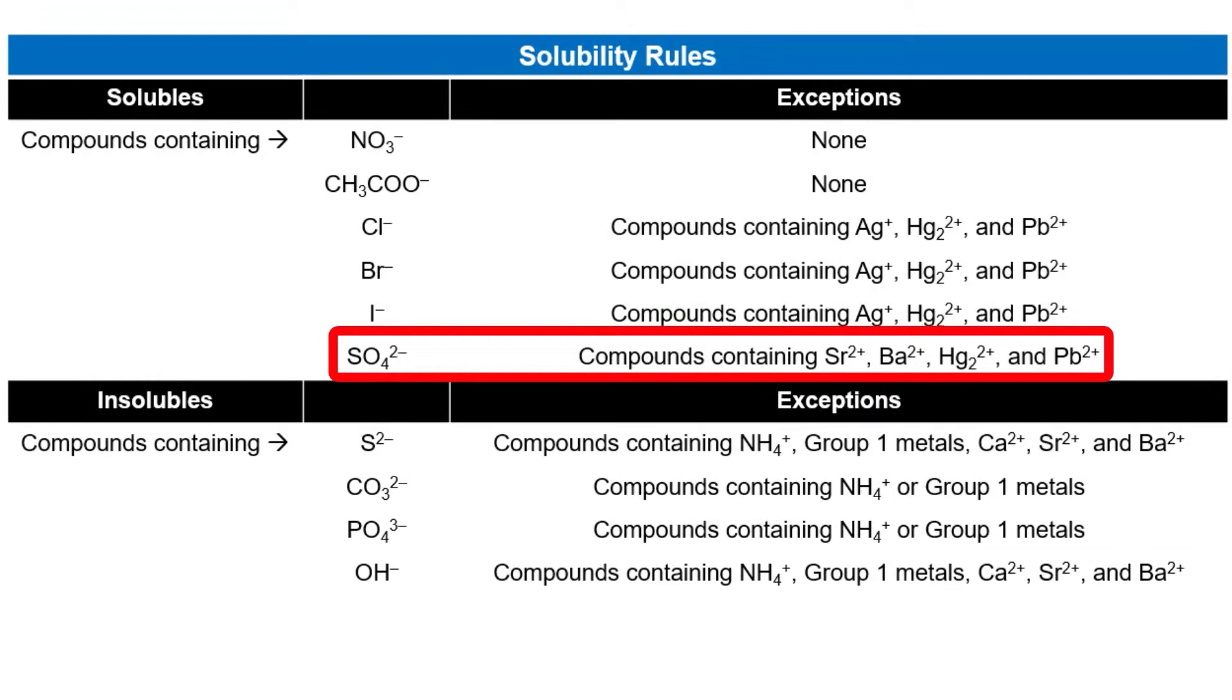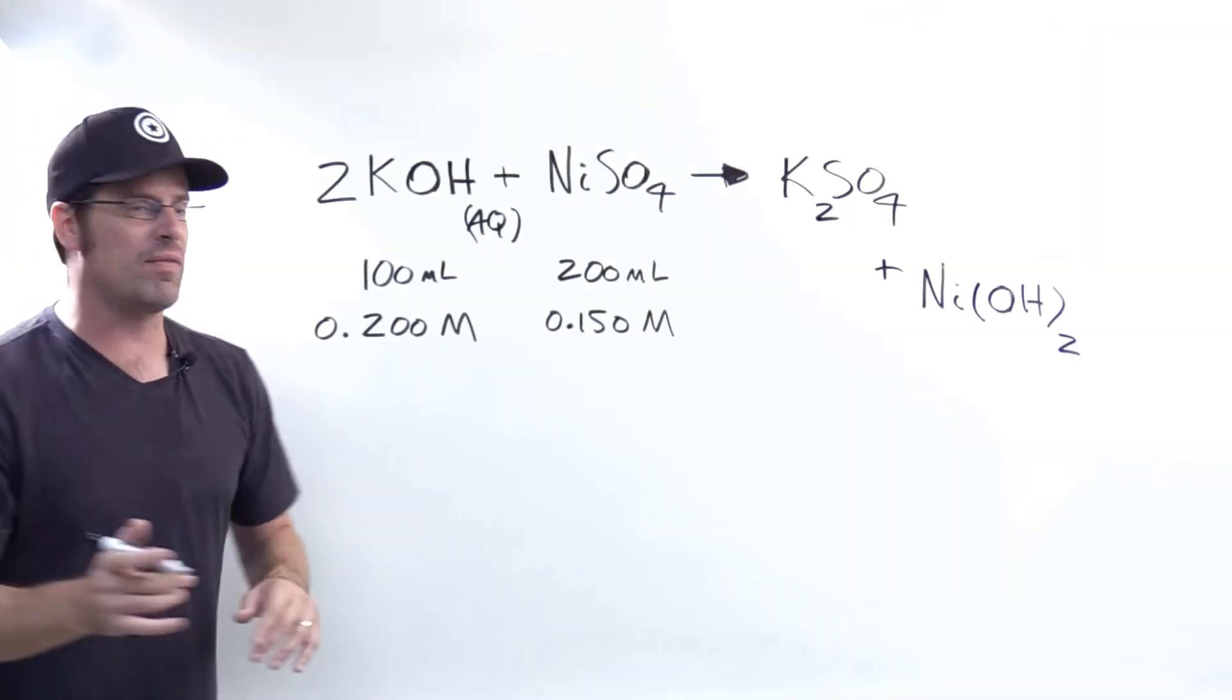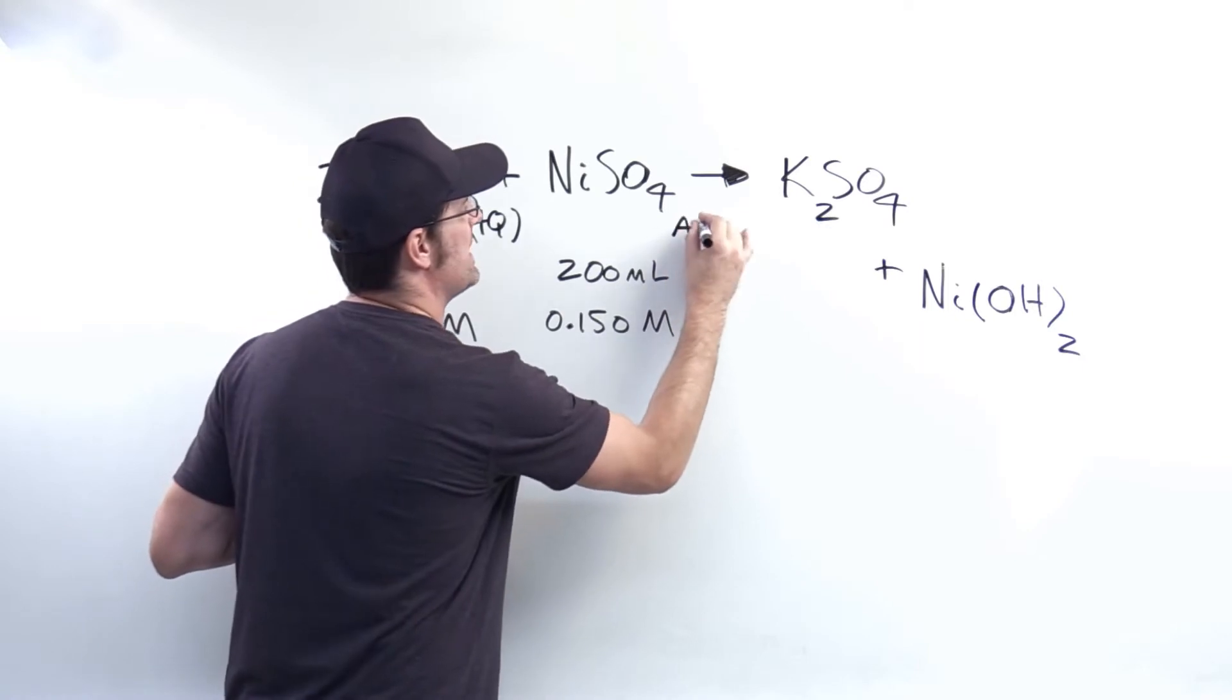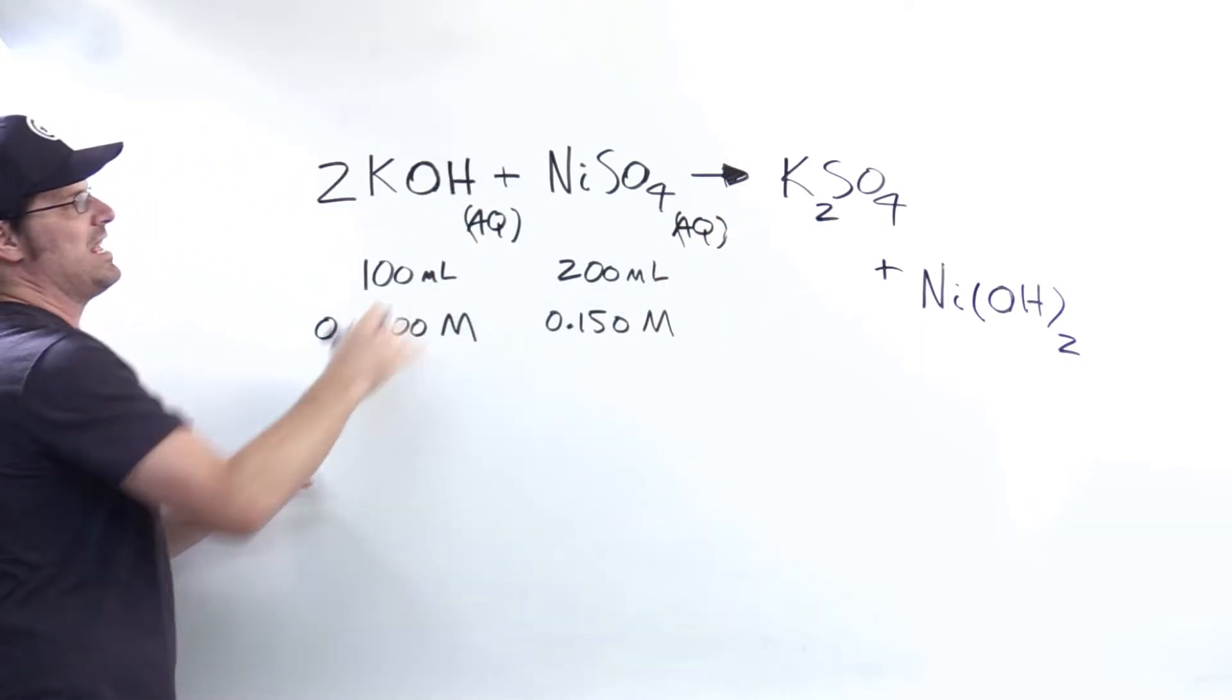Now what about nickel sulfate? Well sulfate, as you'll see in the solubility table, is in the top half, the solubles. So all sulfates are soluble, as far as we care, except for strontium, barium, mercury, and lead sulfates. Nickel is not one of those exceptions, which means that it also is water soluble. So we write an AQ next to it.